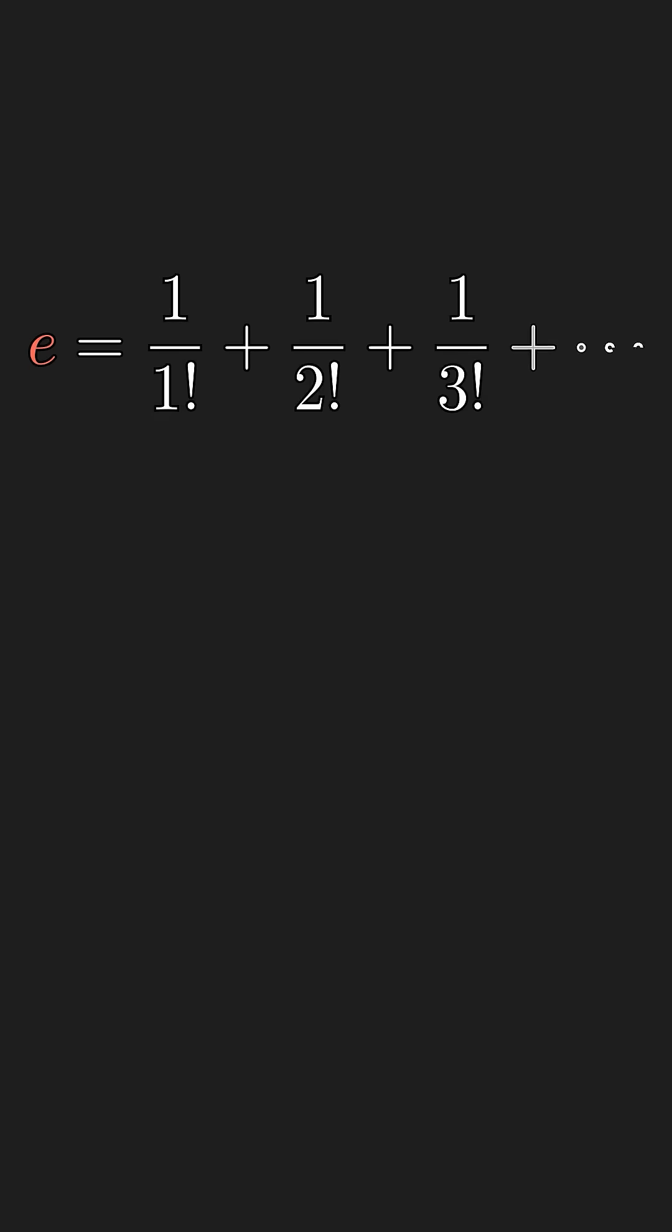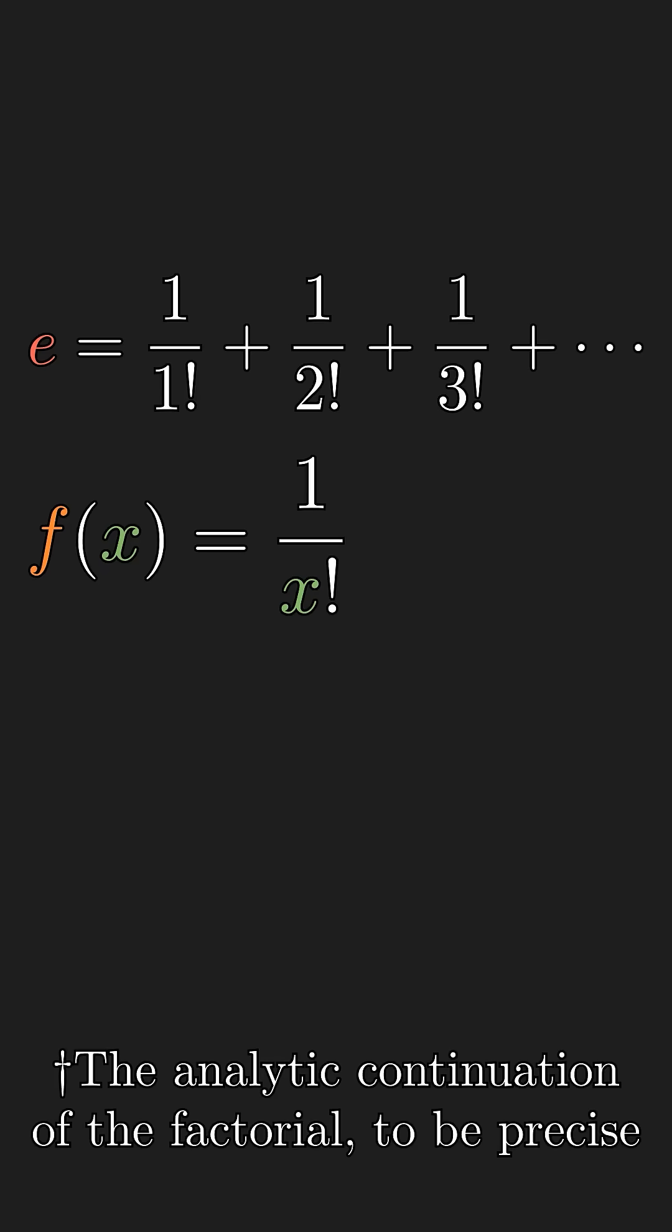E could be written as the sum of reciprocals of the factorial. So let's take the reciprocal factorial function. The derivative of f at 0 comes out to Gamma, and the second derivative comes out to Gamma squared minus Pi squared over 6.